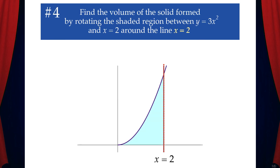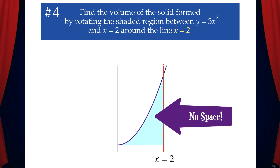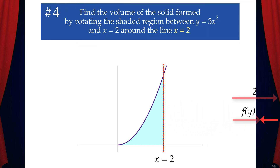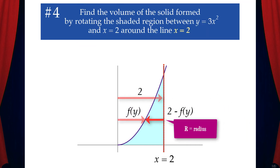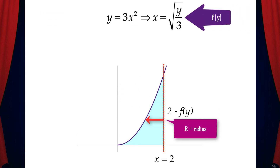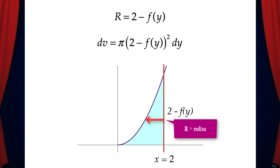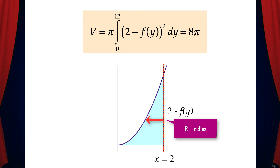Last example: Find the volume of the solid formed by rotating the shaded region between y equals 3x squared and x equals 2 around the line x equals 2. Again, this is the same region as before, but we're rotating around a different axis. Since there's no space between the region and the axis of rotation this time, we'll use the disk method. The radius is 2 minus f of y, and f of y equals the square root of y over 3. Now we can write dv, the volume of one disk, which is pi times the quantity of 2 minus f of y squared dy. V equals pi times the integral from 0 to 12 of the quantity of 2 minus f of y squared dy, and that equals 8 pi.